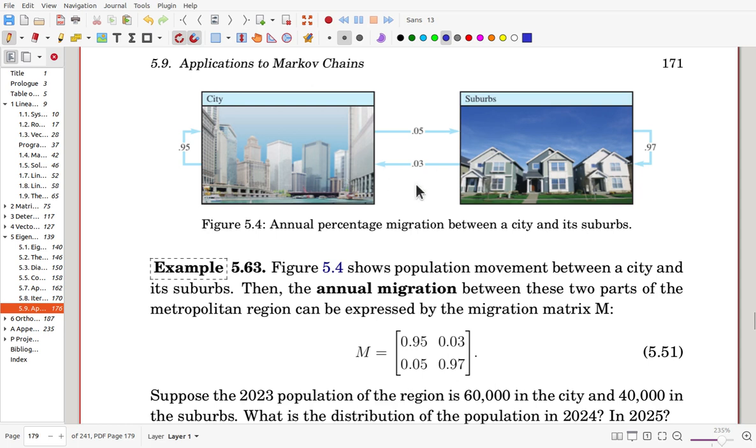Now, assume, in a city and its suburbs, it is observed. Then we can model a Markov chain. And annual migration between these two parts of the metropolitan region can be expressed by a migration matrix M. So, that is this value. So, first column is representing city, and second column is its suburbs. In the city, again, it is city and suburbs. City to city, the city to suburbs, and that is suburb to suburb, suburb to city.